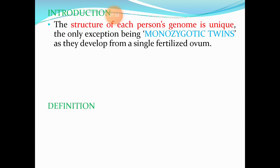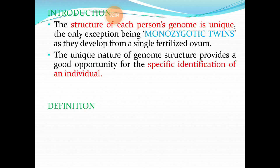Monozygotic twins develop from a single fertilized ovum, and therefore even their genome is the same. But except for monozygotic twins, the structure of each person's genome is different and unique. This unique nature of the genome structure provides a very good opportunity for the specific identification of an individual — individual A has a particular unique genomic makeup which is not the same as individual B.